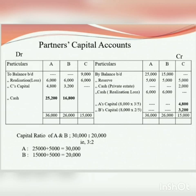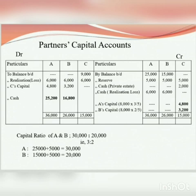How do we find the capital? Capital balance plus reserve. A's capital balance plus reserve: A's capital is Rs. 25,000 and reserve share is Rs. 5,000, giving Rs. 30,000. B's capital balance is Rs. 15,000 plus reserve Rs. 5,000, giving Rs. 20,000. So the ratio of A to B is 30,000 to 20,000.